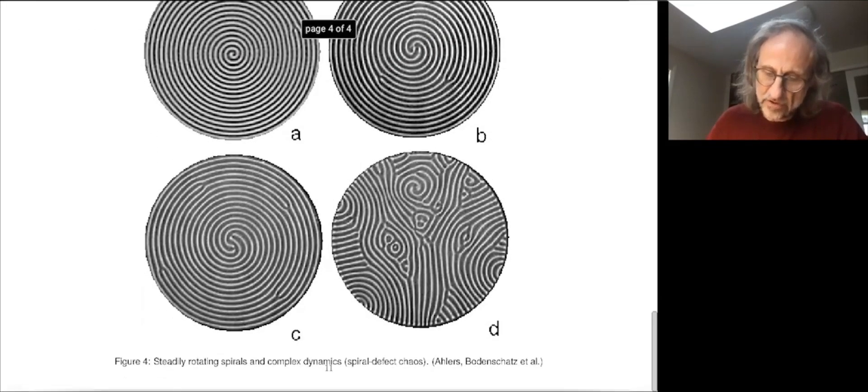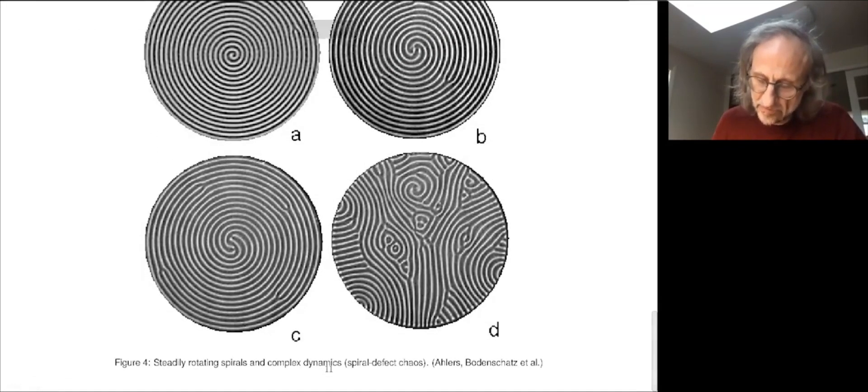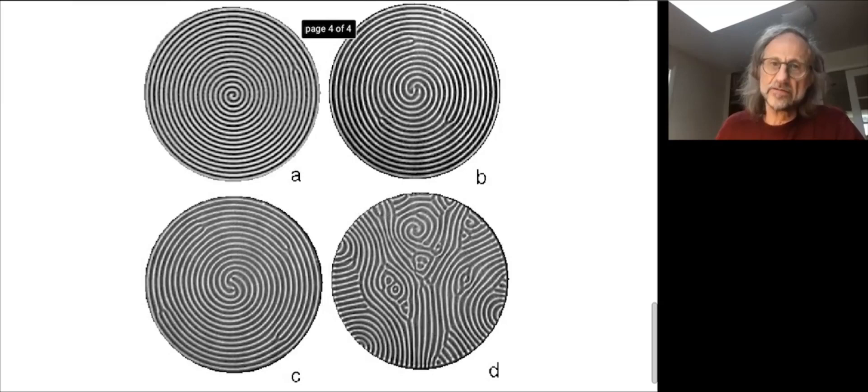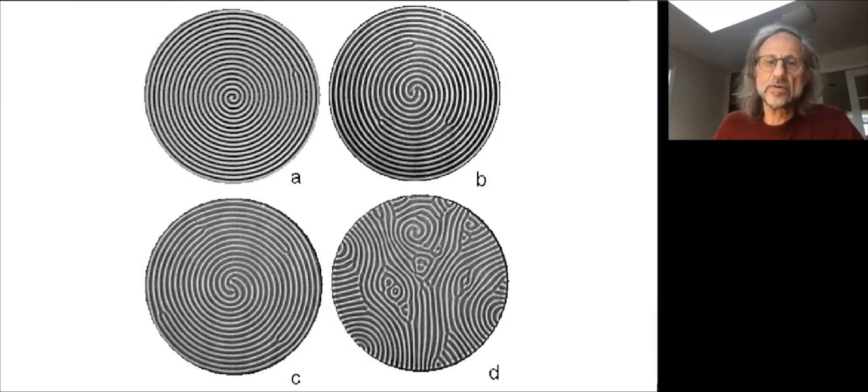And eventually, as the heating is increased, they form these complicated states which are actually chaotic, where you have all these defects forming and coming and going away, and spirals form and spirals go away. It's called a spiral defect chaos state. This will be too complicated for us. But I just want to illustrate again that you have these systems where when you change parameters, you get a qualitative change in the behavior of the system. And these qualitative changes are one of the things we want to investigate in this class.